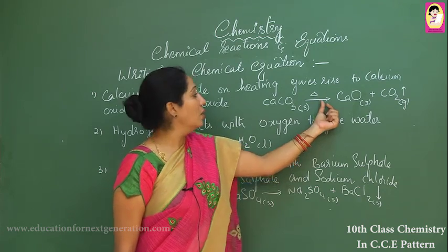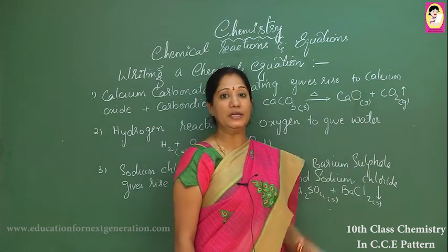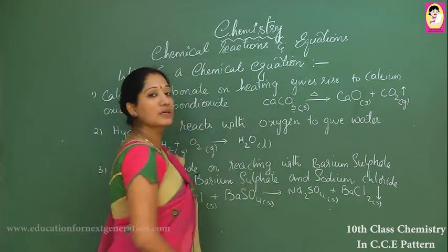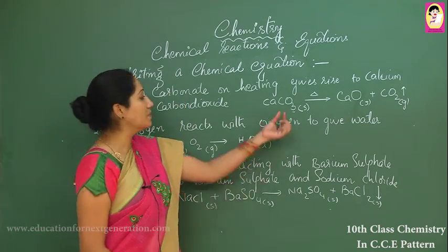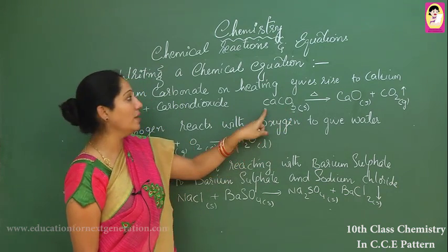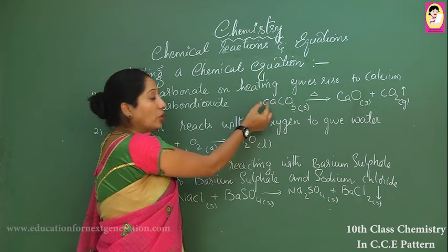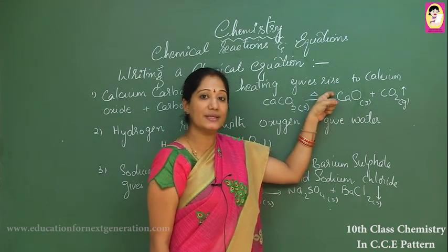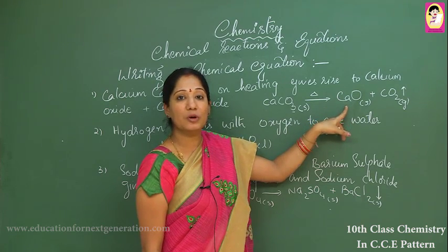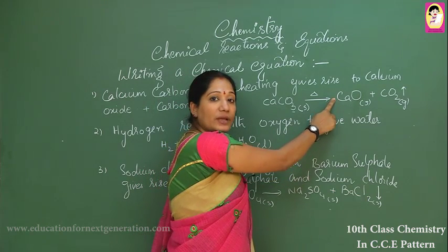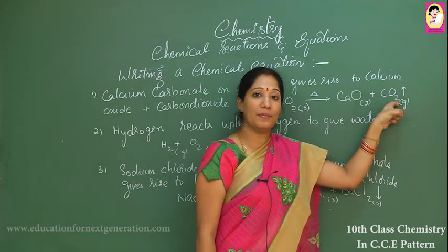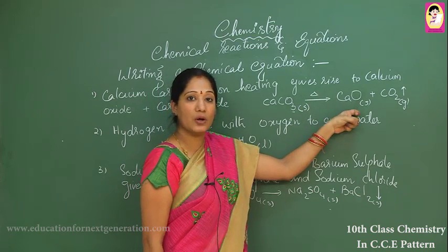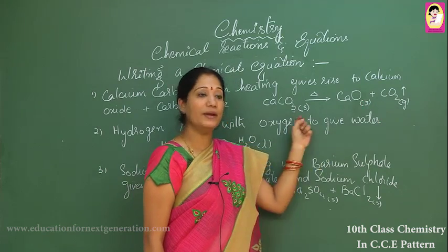On heating, calcium carbonate gives rise to one molecule of calcium oxide plus one molecule of carbon dioxide. The subscript 3 on oxygen indicates three oxygen atoms. No subscript on carbon means one carbon atom, and no coefficient in front of calcium carbonate means the coefficient is one. One mole of calcium oxide and one mole of carbon dioxide are produced — the reactants and products are separated by means of an arrow.